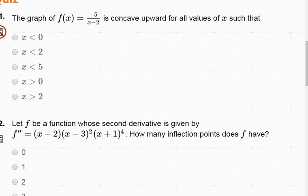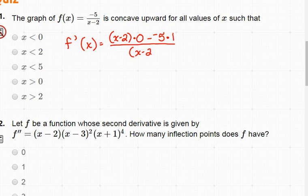So the calculator inactive, and it says that the graph of the function negative 5 over x minus 2 is concave up for what x values? When we see concave up, we should think second derivative. So, the first derivative is low d high minus high d low all over low squared. Simplify that, that 0 subtracting a 5 makes a positive 5. But concavity comes from the second derivative, so we need to take the derivative again.